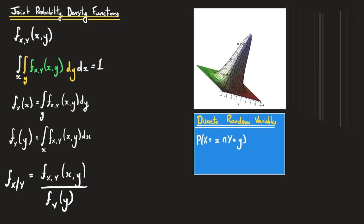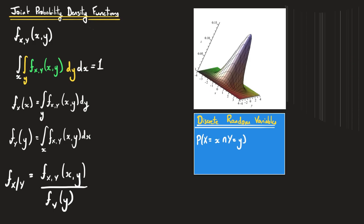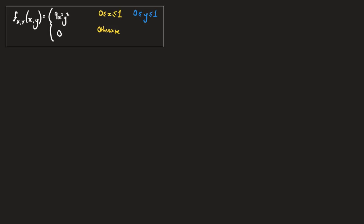Now we'll work through an example. We have a joint probability density function for random variables x and y defined as f(x, y) = 9x²y², defined for x between 0 and 1 and y between 0 and 1, and zero otherwise. This PDF tells us about the relative likelihood of different pairs of observations of x and y.